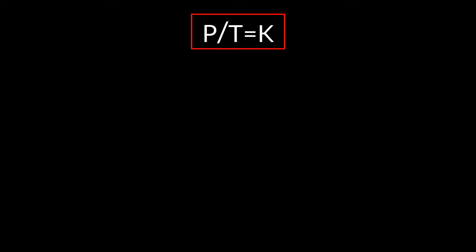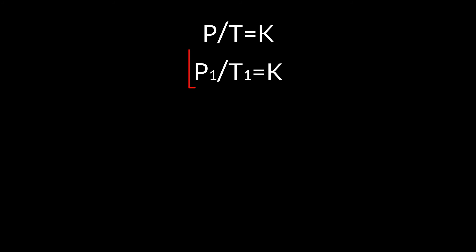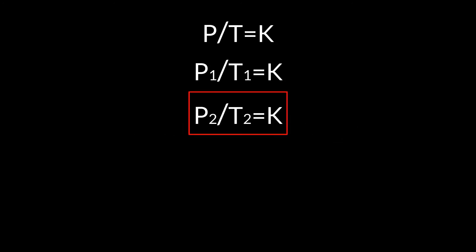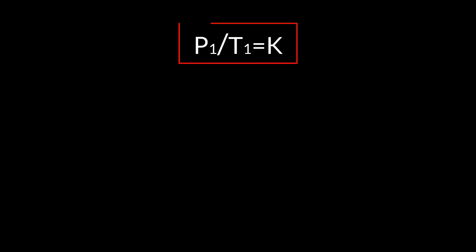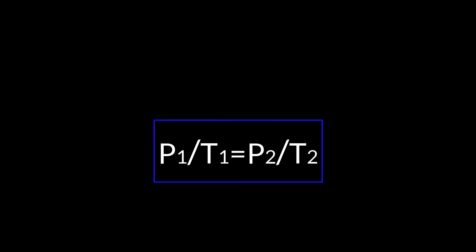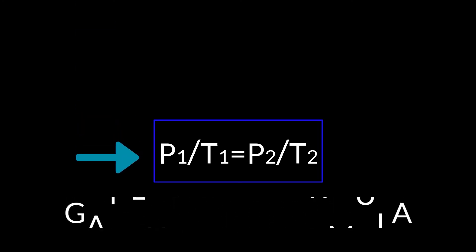The formula of Gay-Lussac's law. From the Gay-Lussac's tutorial, we got P over T equals K. For the initial stage, we can write P1 over T1 equals K. And for the changed stage, we can write P2 over T2 equals K. As P1 over T1 equals K and also P2 over T2 equals K, therefore we can write P1 over T1 equals P2 over T2. And this is the formula for Gay-Lussac's law. The formulas of Boyle's law, Charles's law, and Gay-Lussac's law at a glance.